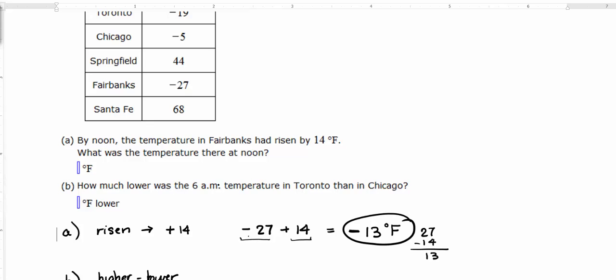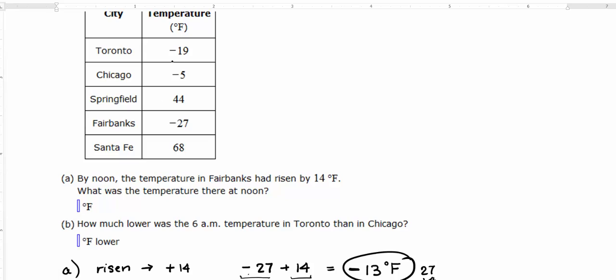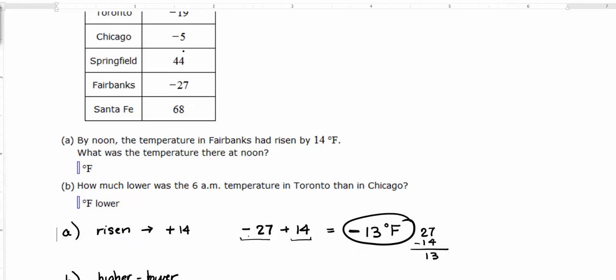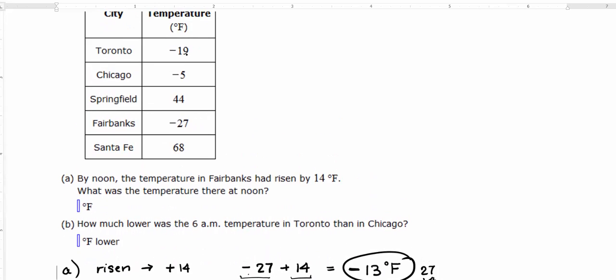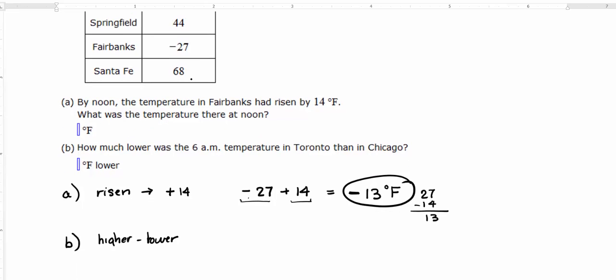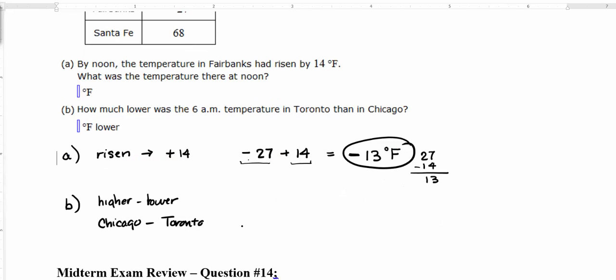Okay, so it says, how much lower was the temperature in Toronto than in Chicago? So let's take a look. We've got Toronto is negative 19, Chicago is negative 5. What's the higher temperature? Which one's actually warmer? Chicago is warmer, so that would be Chicago minus Toronto.